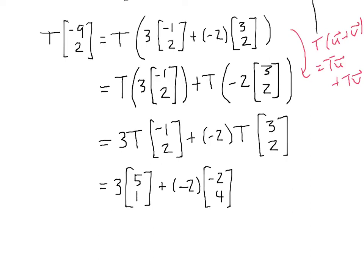So at this point what we used is that T of a scalar times u is equal to the scalar times T of u. So that's our other linearity property. And now all we have left to do is to compute this linear combination.